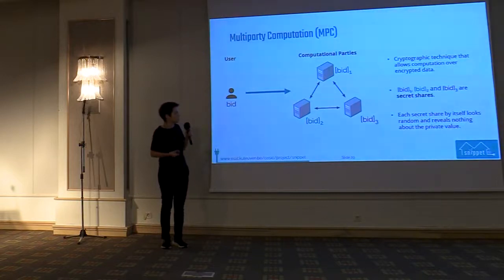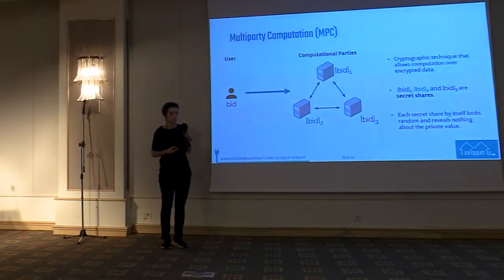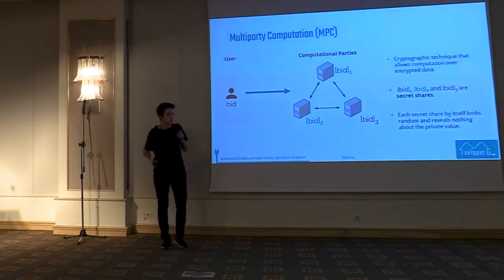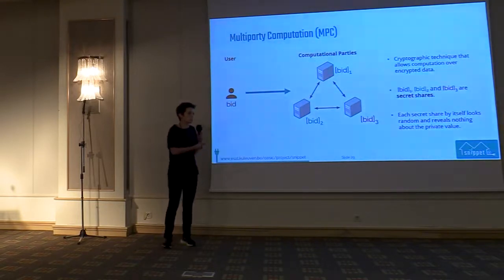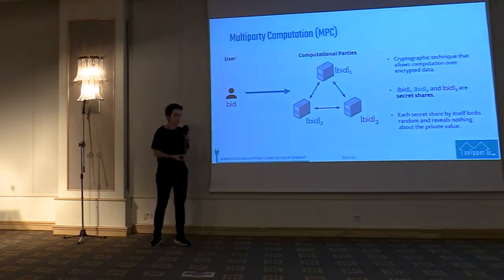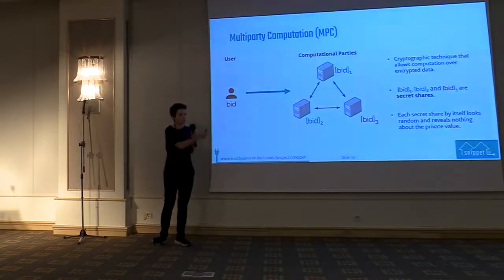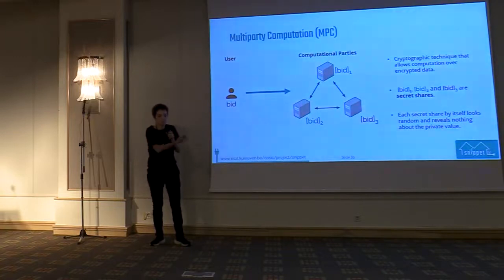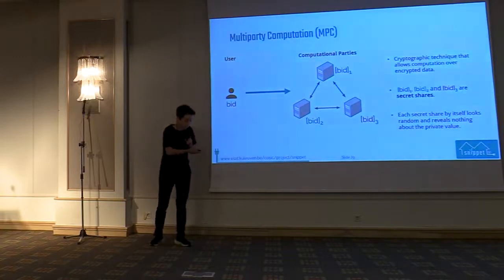That's why we usually choose computational parties to be entities with conflicting interests — for example, in this case it could be a user representative, an aggregator, and a supplier. As long as not all parties are acting maliciously, privacy will be preserved.